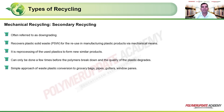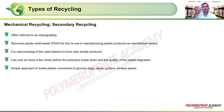If the quality is not sufficient for primary recycling, secondary recycling — known as downgrading — is used. It recovers plastic solid waste for reuse in manufacturing plastic products via mechanical means, reprocessing used plastic into new, similar products. However, it can only be done a few times before polymers break down and quality degrades. Applications include grocery bags, pipes, and gutters — items that don't need high structural performance, such as drainage or water supply components.